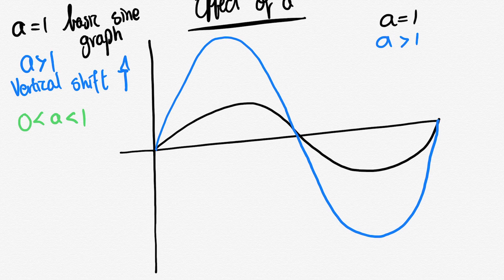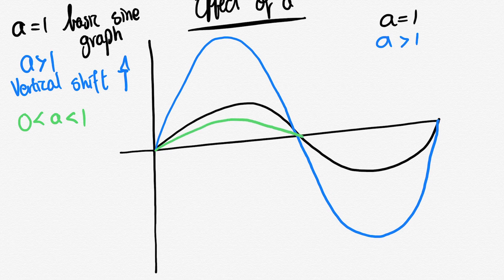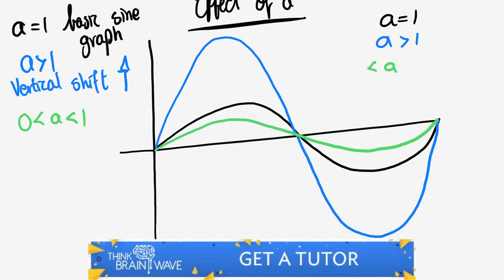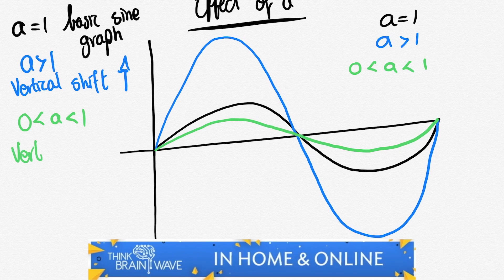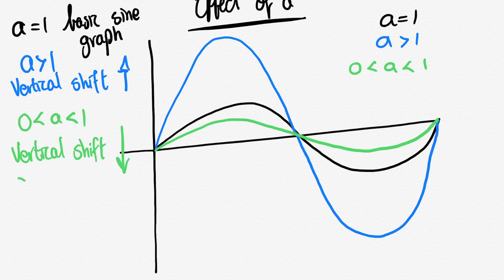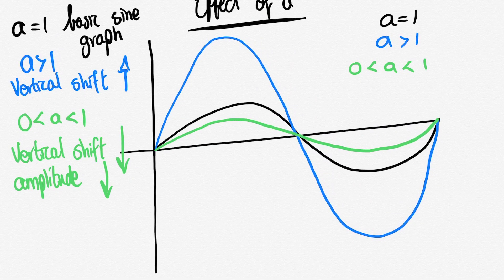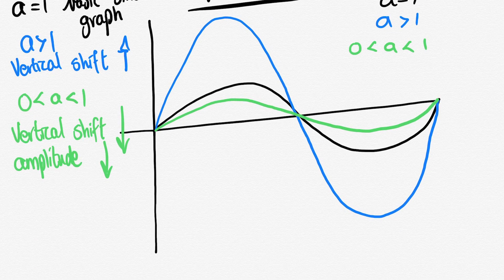Now let's do the graph where a is between the value of zero and one. So it's a positive value but it is less than one. As we can understand, if you increase the value you increase the amplitude. Now if you decrease that value but it still remains positive, you decrease the amplitude value as you can see by the green function. There's a vertical shift decrease. Your a is equal to one would be your amplitude be one. Now you may have put your value at 0.5 so your amplitude would be 0.5. That's basically what that graph is showing you there.